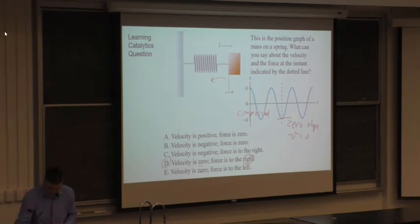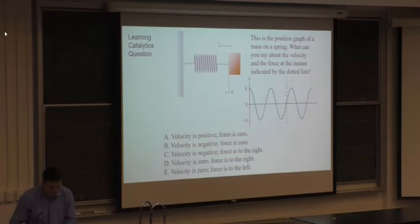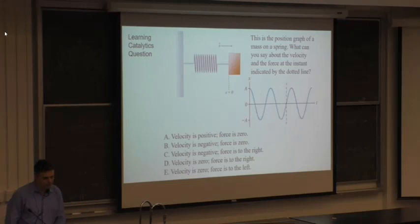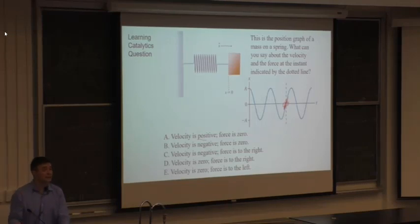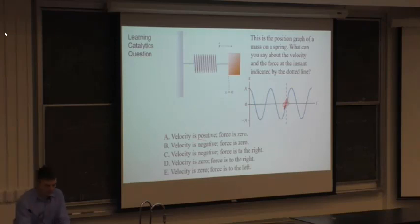Same question, different instant: the slope of x(t) is positive here, so velocity is positive (to the right). At this moment the spring is passing through equilibrium — neither stretched nor compressed — so the force is zero. Velocity is positive, force is zero.